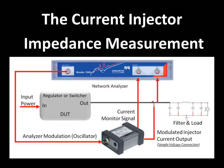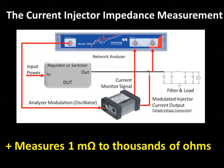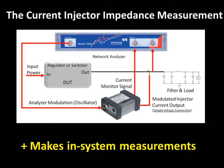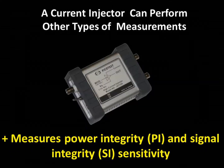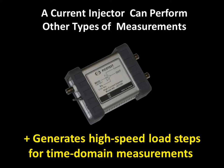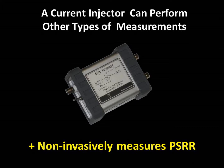The current injector method is not quite as accurate as the two-port measurement, but it can come close. This technique can provide measurements from approximately one milliohm to thousands of ohms or more, and can be used for in-system measurements. The injector impedance measurement works very well with low-power devices such as op-amps, voltage references, and low-power regulators. We have even used it with Class D audio amplifiers. A major benefit of this measurement is that it can also be used to determine power integrity and signal integrity sensitivity, as well as to perform time domain measurements such as high-speed load steps, and also to non-invasively measure PSRR.